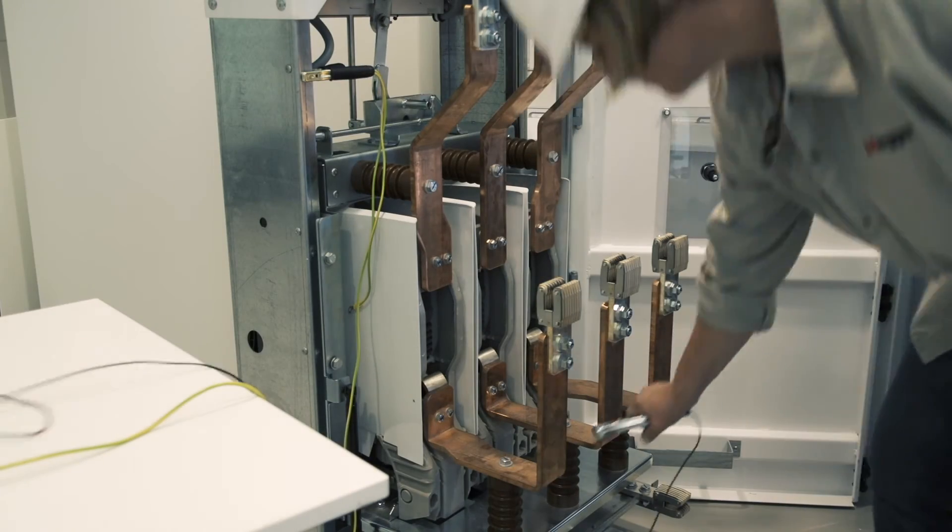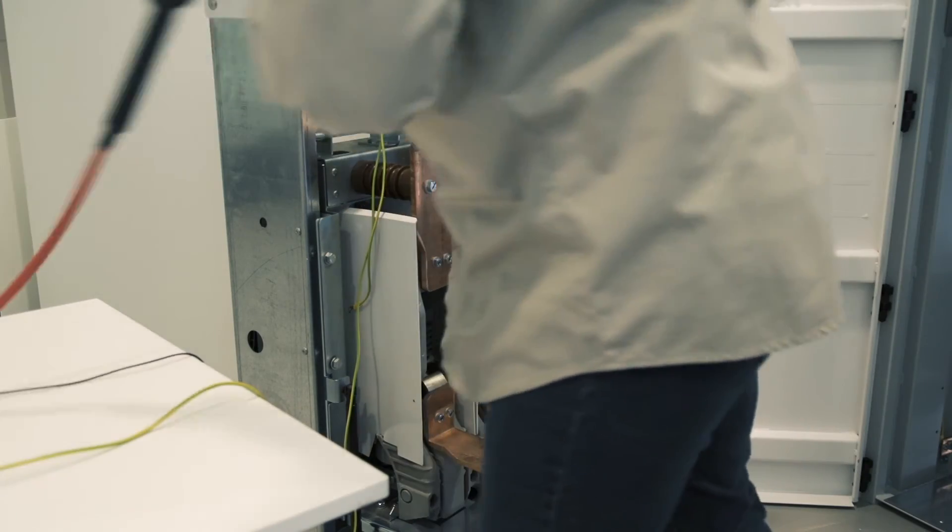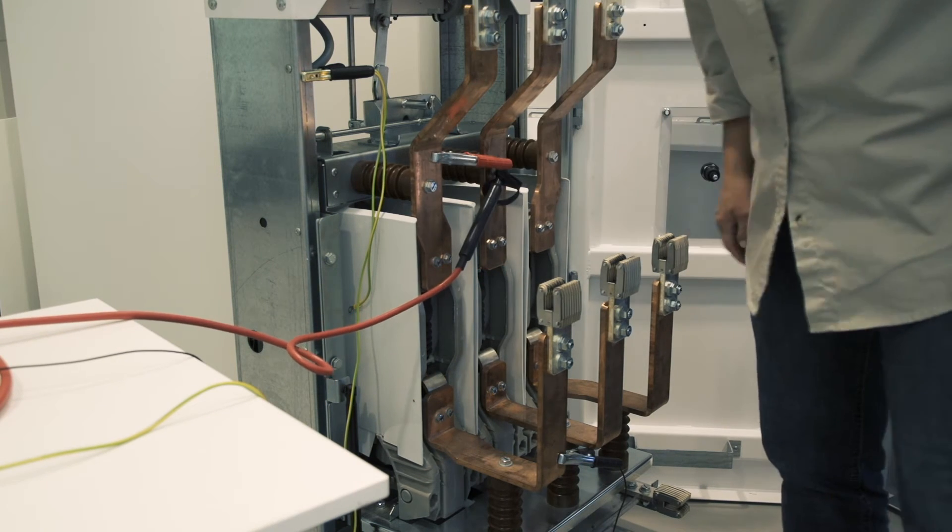Ground both test instruments and test object to the same point. Apply HV test leads across the first phase vacuum bottle.